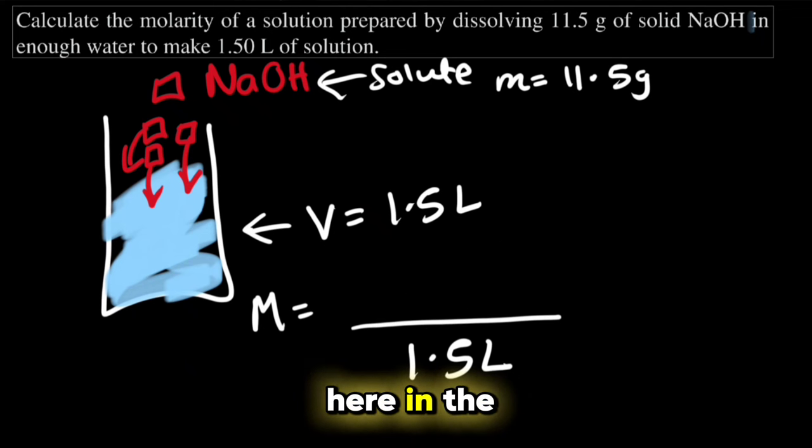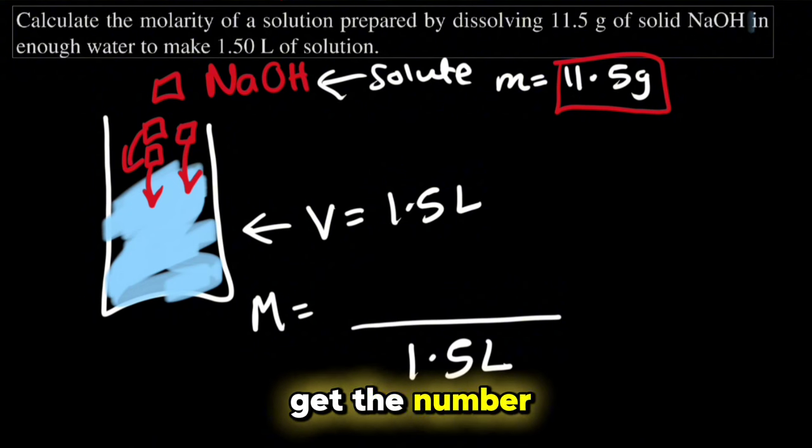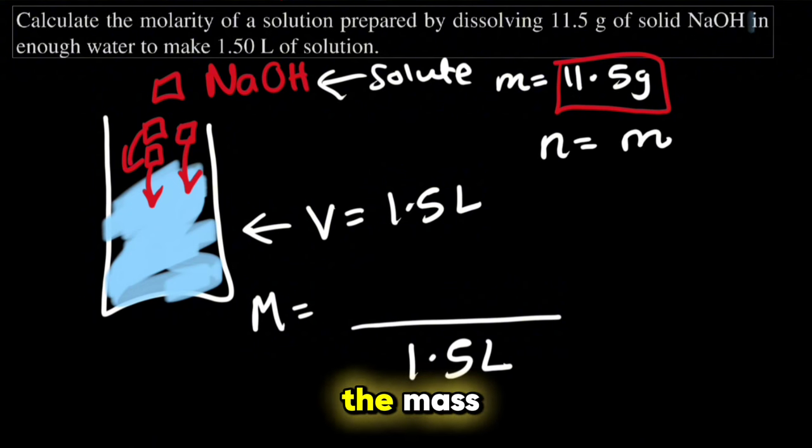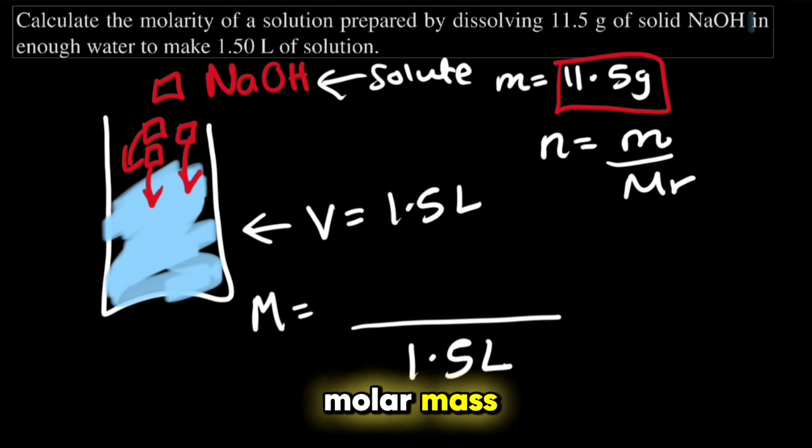And we are given here in the question the mass. How can we get the number of moles? Well we know that the number of moles equals the mass divided by the molar mass. So the number of moles will be the mass which is 11.5 divided by the molar mass.